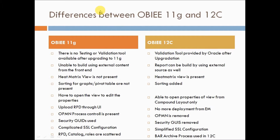One more important view added to 12c is the Heat Matrix view. The biggest advantage of the Heat Matrix view is that we can accommodate a huge amount of data within a single field view, which gives you a lot of information related to the data.